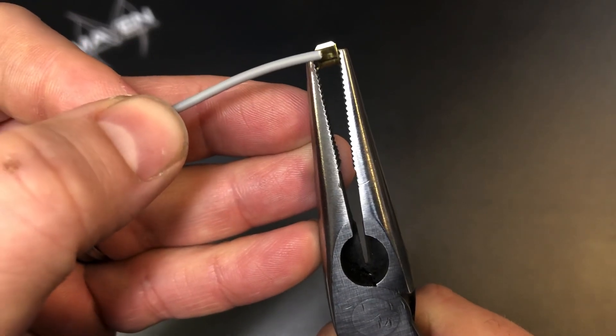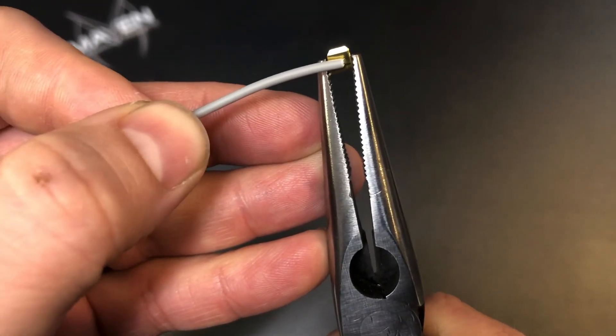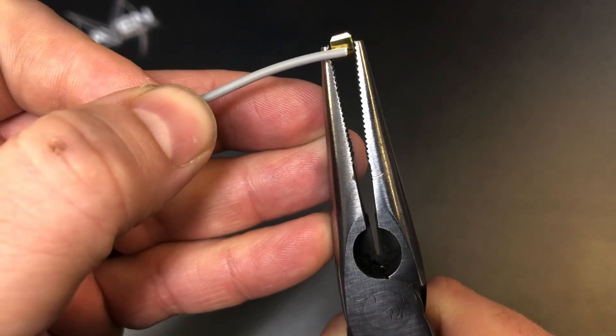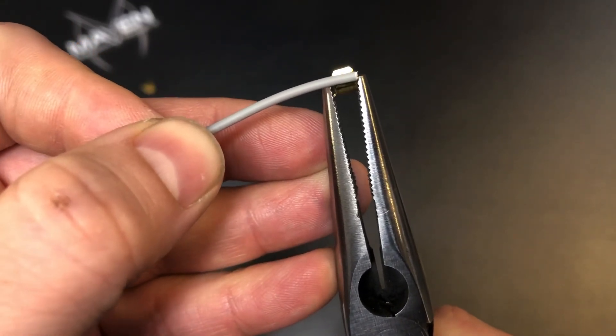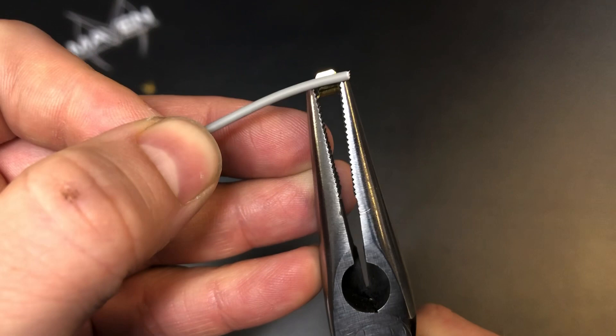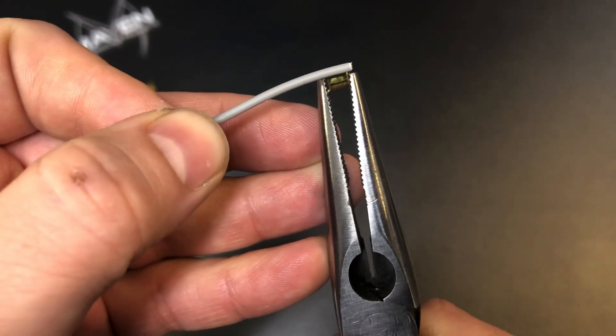We don't want the insulation caught up in there at all. We want to make sure that the wire is not only halfway in, we want it completely captive with some showing on each side. So we'll go ahead and strip the wires accordingly.